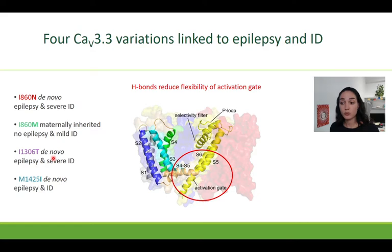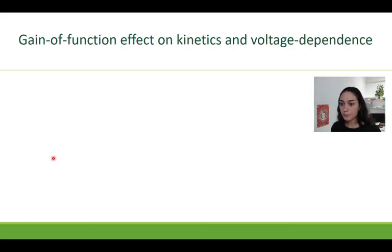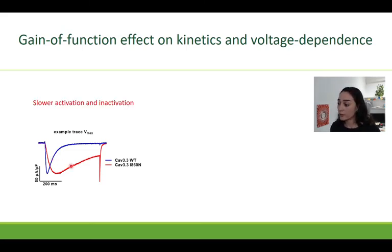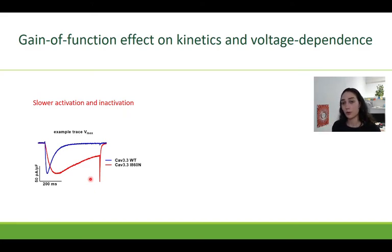This is expected to slow the opening and closing of the gate upon activation and inactivation. We expressed the wild type and the mutated channels in HEK cells and indeed we saw a slowing of the activation and inactivation of the mutant here in red as compared to the wild type here in blue. This slowing of inactivation is a gain-of-function mutation, which would result in a prolonged and therefore increased calcium influx upon neuronal depolarization.